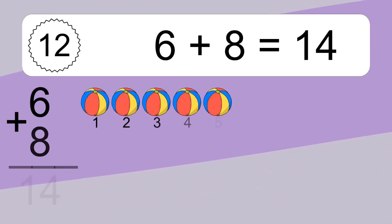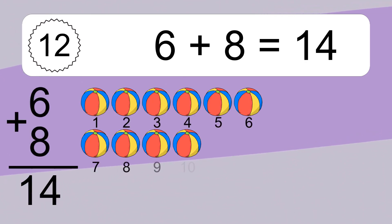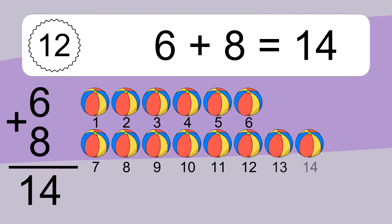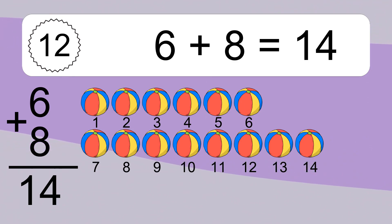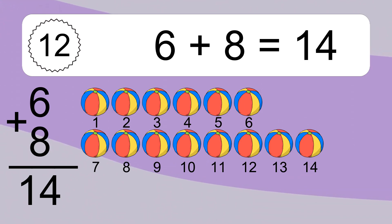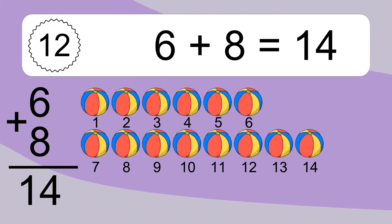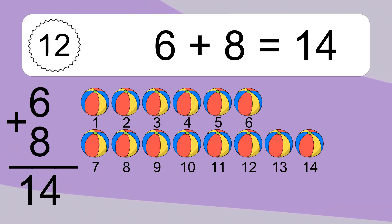6 plus 8 equals what? 6 plus 8 equals 14. Let's count it: 1, 2, 3, 4, 5, 6, 7, 8, 9, 10, 11, 12, 13, 14.